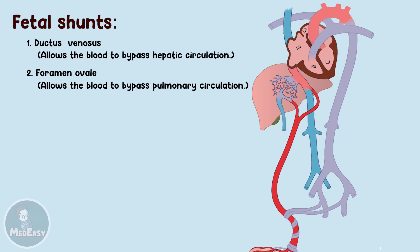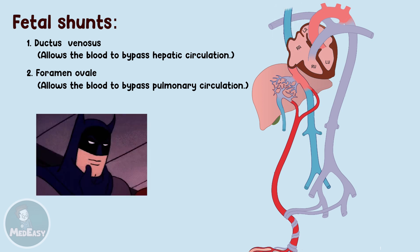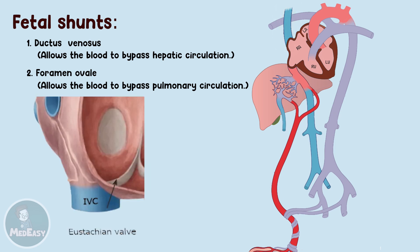The deoxygenated blood from the superior vena cava passes through the right atrium towards the right ventricle. You may wonder why the blood coming from the inferior vena cava is directed towards the foramen ovale and left atrium, while blood from the superior vena cava passes through the right ventricle. The reason is that there's a valve on the inferior vena cava called the eustachian valve, which guides the blood towards the foramen ovale.